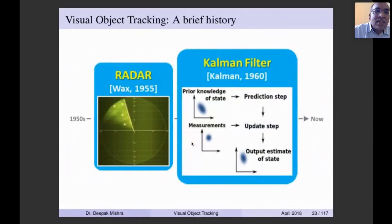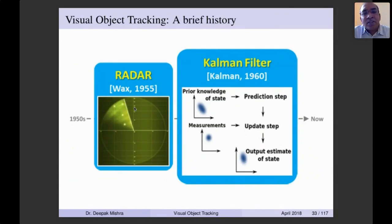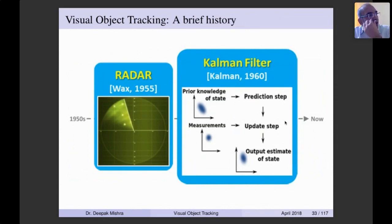Visual object tracking has a long history. It started with radar — tracking enemy aircraft, measuring location, and continuously tracking an object in the field of view. People earlier used the Kalman filter, which uses prior knowledge of state, applies a prediction step, then updates using measurements. The prediction and update steps together estimate the output state, and this cycle is repeated for continuous tracking. It is an earlier Bayesian way of doing tracking.